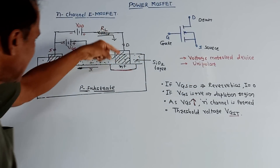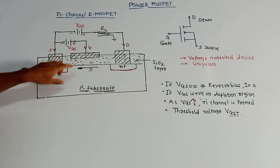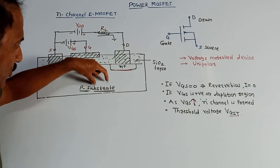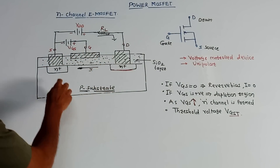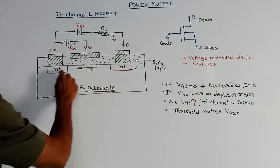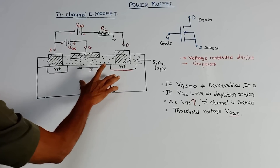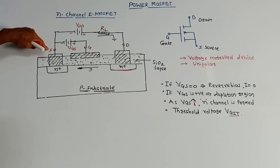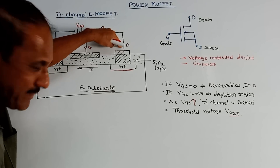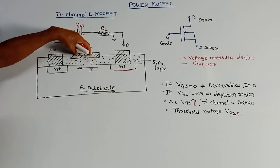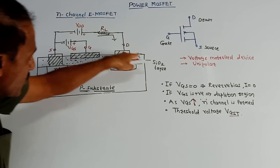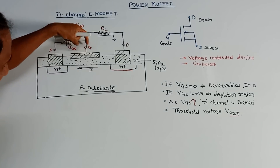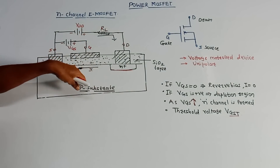Now let us discuss the construction of this device. As shown in this diagram, it consists of a P-type substrate, also called body. Two heavily doped N-plus regions are deposited on this P-type substrate, and metal connections are taken out. This is the Source Terminal, this is the Drain Terminal, and this is the Gate Terminal. I have shown the SiO2 layer.